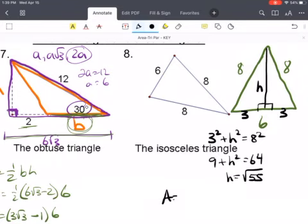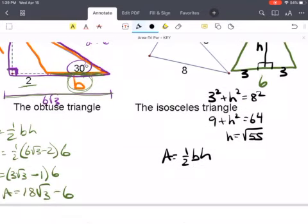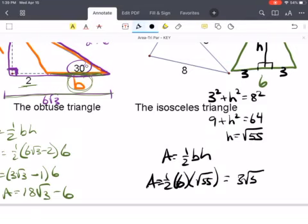So now finding the area is one-half base times height. My base is 6, and my height is root 55, which simplifies to 3 square root 55.